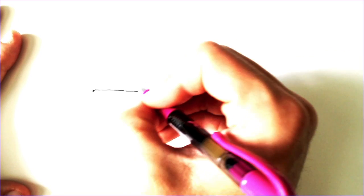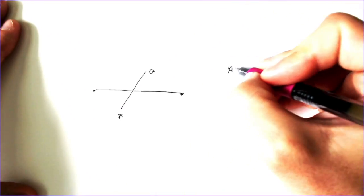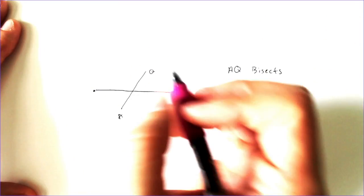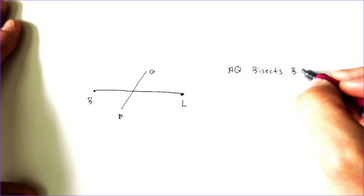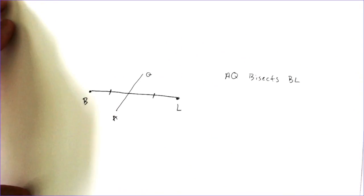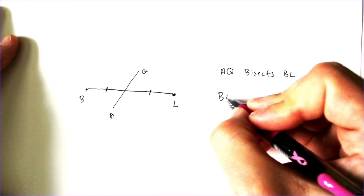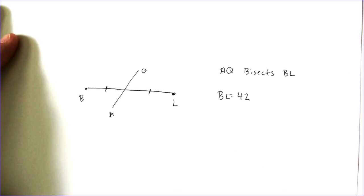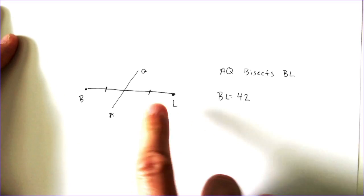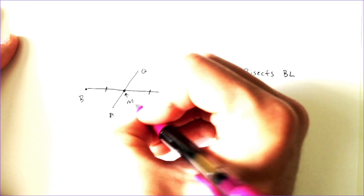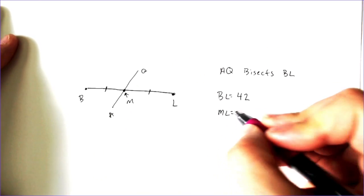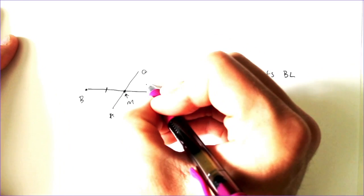For our next problem, we're going to do one that's slightly easier, but because it's easier you actually have multiple options on how to solve it. So let's say you're given a line segment, and it's either bisected or has a midpoint. Line AQ bisects our original line BL. That would mean these two chunks here and here would have to be equal. Let's say that BL is equal to 42 — all the way across is 42 — and the midpoint is M. Let's say that ML is equal to 5x plus 1.